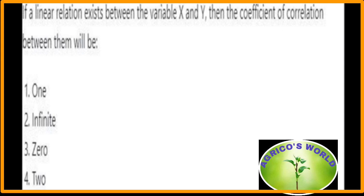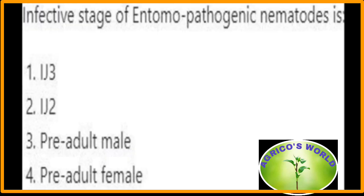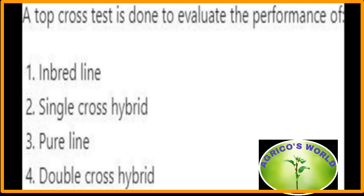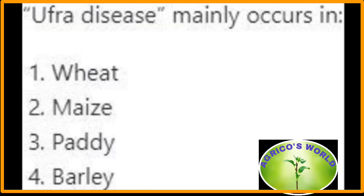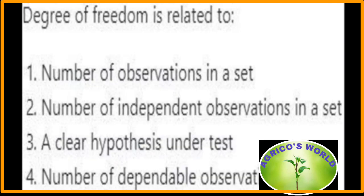If a linear relation exists between variables x and y, then the coefficient of correlation between them will be 1. The infective stage of entomopathogenic nematodes is J2 — juvenile stage 2. A top cross test is done to evaluate the performance of a single cross hybrid. Ufra disease mainly occurs in paddy. Degree of freedom is related to the number of independent observations in a set.